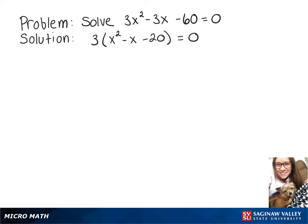Now we can factor what's left in parentheses. We need two numbers that multiply to give us -20 and add to give us -1. For that, we use -5 and 4, giving us 3(x - 5)(x + 4) = 0.